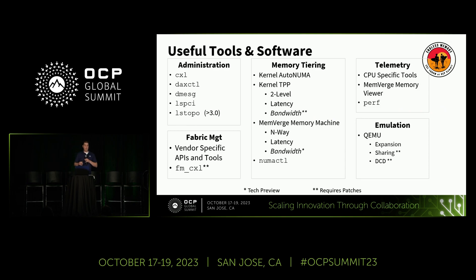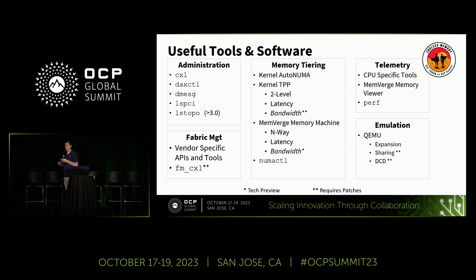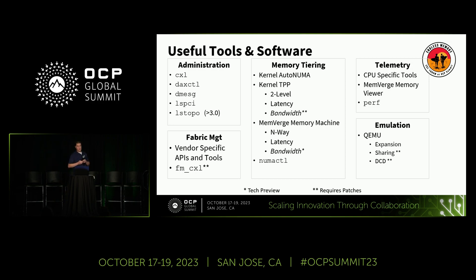Here's a crib sheet summarizing the tools and utilities available: CXL CLI, DAX CTL, LSPCI, LSTOPO — if you use version 3.0 you can actually see the physical PCI tree and it decodes CXL devices very well. For fabric management, there are vendor-specific tools and APIs. FMCXL is not really a tool right now — it's a patch set currently under review in the Linux kernel mailing list. If you have a switch and want to play with mailbox commands and MTCP, you can compile it yourself.